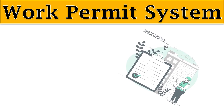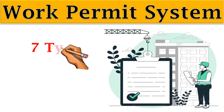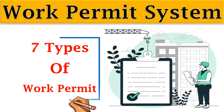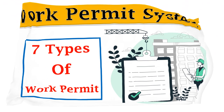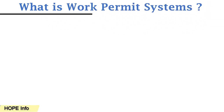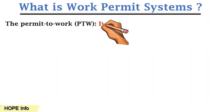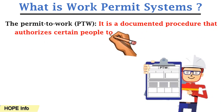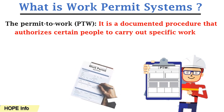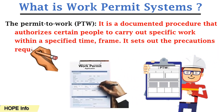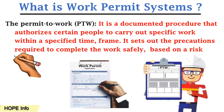Hello friends, welcome to Hub Info channel. From this video you are going to understand about the work permit system, also known as PTW. A permit to work system is a document procedure that authorizes certain people to carry out specific work within a specific time frame. It sets out the precautions required to complete the work safely, based on a risk assessment.